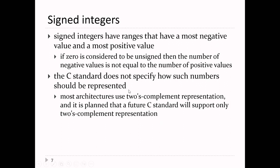The C standard doesn't actually say how signed integers should be represented on the computer. It turns out there are at least three different ways: one's complement, two's complement, and signed magnitude. Almost every modern computer uses two's complement. I think C23 says it will only support two's complement, but as far as the standard is written right now, your computer can use any representation of the signed integers.